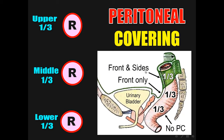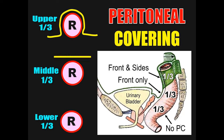Regarding the peritoneal covering of the rectum, the rectum is divided into three parts. The upper third is covered in front and on the sides, and on each side of the upper third there is a pararectal fossa. The middle third is covered anteriorly with peritoneum. The lower third is not covered with peritoneum.